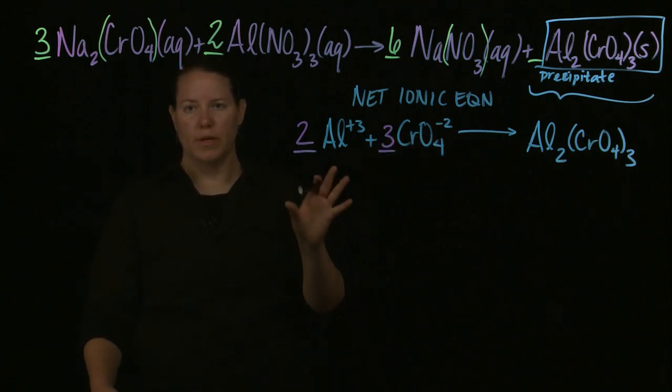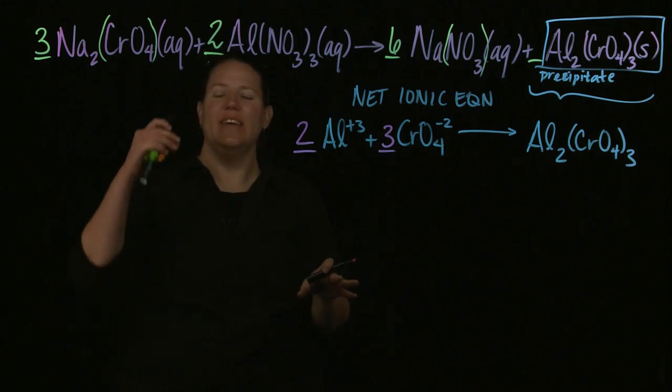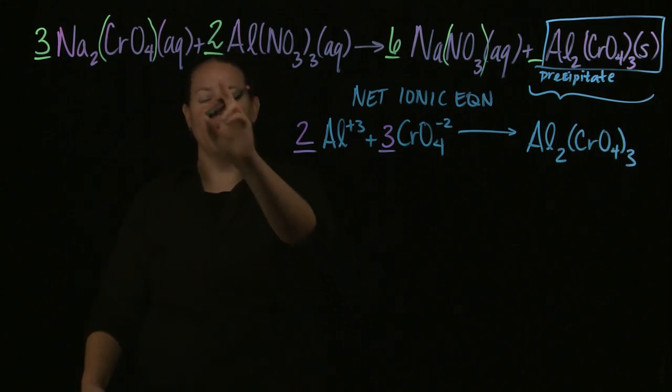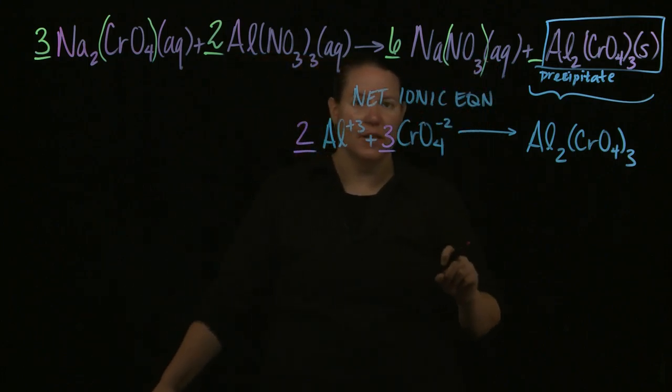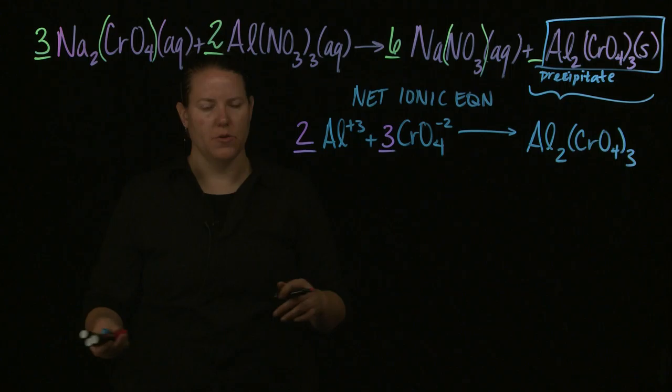And I have three CRO4s, and suddenly I have my net ionic equation already written down. This only works. I call it the quick and dirty way of doing the net ionic equation. And it only works if you have this pattern of both reactants being AQs. One of the products as an AQ, and the other one as something other than an AQ. So an S, L, or G.